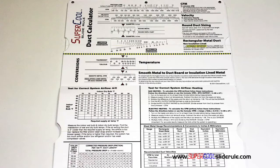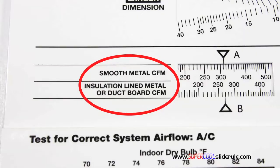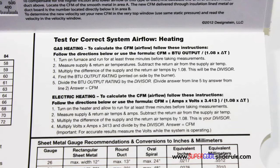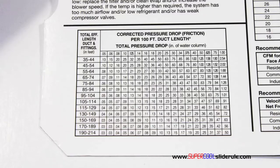Inside is packed with even more information. It performs sizing of both metal and flexible duct. It has the only direct reading conversion from smooth metal to insulation-lined metal we've ever seen. The majority of technicians have never been taught that if the insulation is on the inside of the ductwork, you cannot size it with a regular duct calculator. It has step-by-step directions for determining airflow through a gas furnace, electric furnace, or an air conditioning unit. It has pressure drop multipliers for ductwork, as well as recommended velocities.